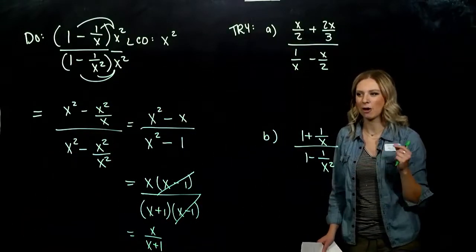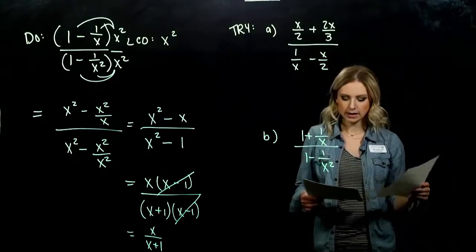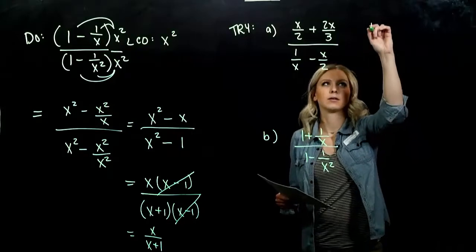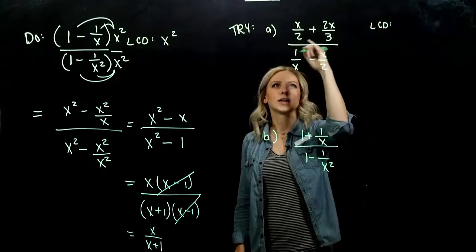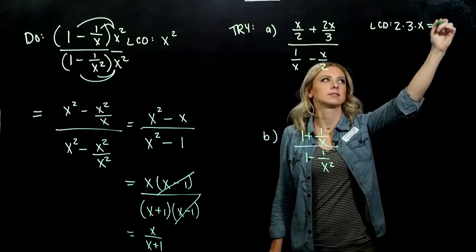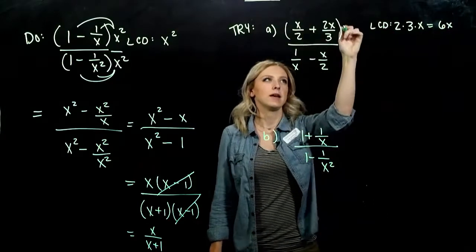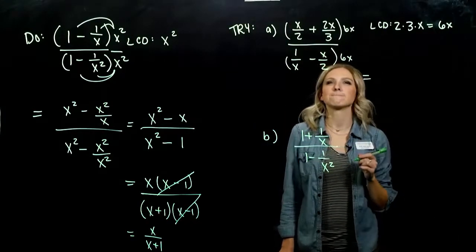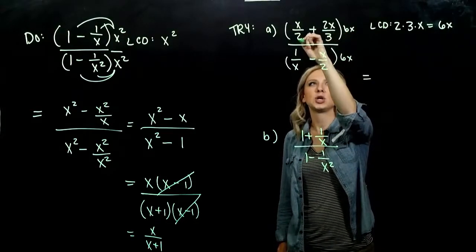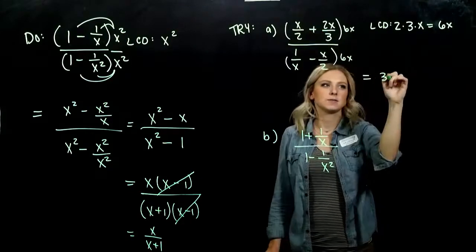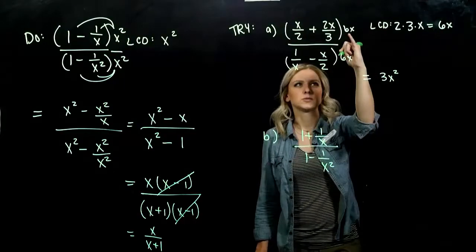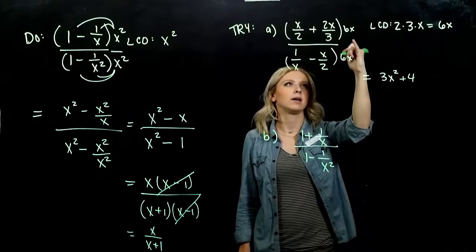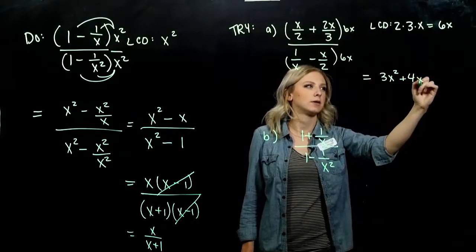We always want to break it down as far as we can go. Now go ahead and use this method to simplify these two practice problems. For the first example, what is the least common denominator? We need to take into account a factor of 2, a factor of 3, and x — so altogether, 6x. Multiplying everything up top and down below by 6x: 6 divided by 2 gives 3, and x times x gives x squared on that term. Then 6 divided by 3 gives 2, and 2 times 2 is 4, with x times x giving another x squared.